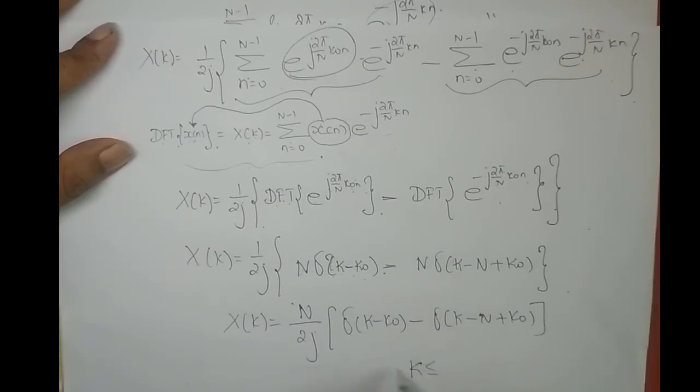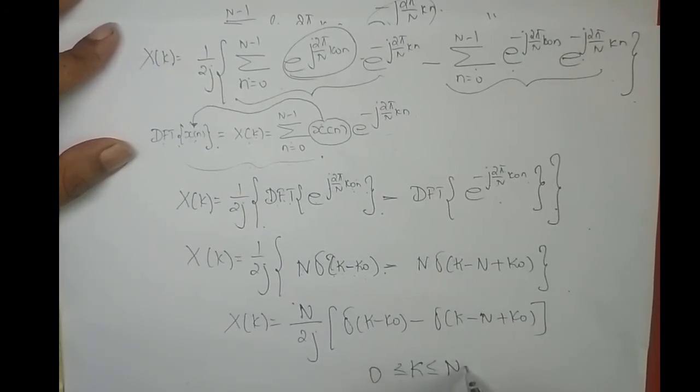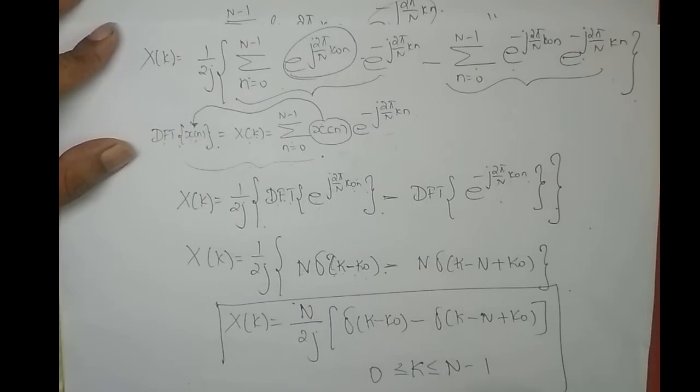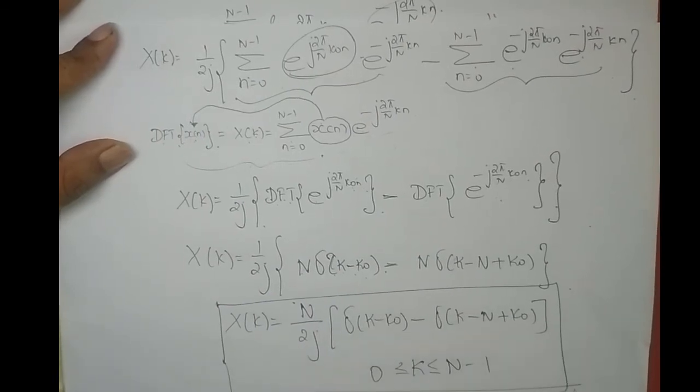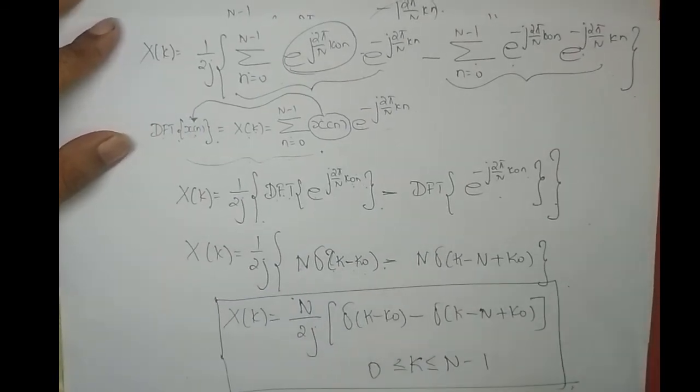Where k is varying from 0 to N−1. This is the N-point DFT of sin(2π/N · k₀n).